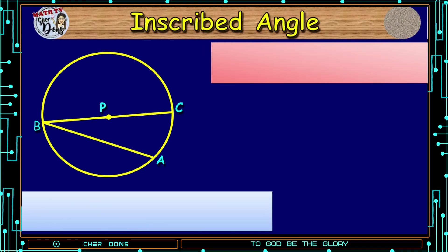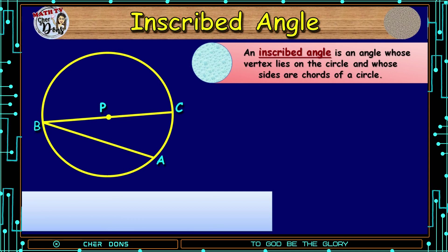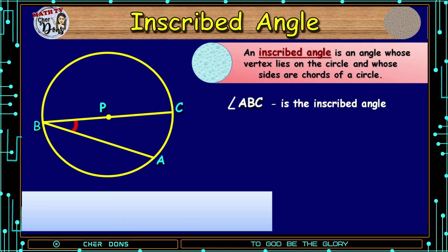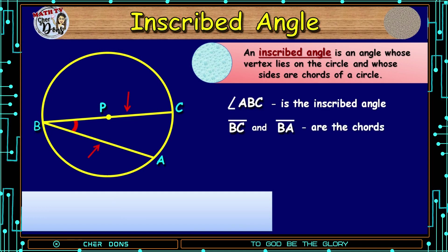Next, we have the Inscribed Angle. An Inscribed Angle is an angle whose vertex lies on the circle and whose sides are chords of a circle. We have here Circle P. Inside the circle is an Inscribed Angle — Angle ABC. Its vertex lies on the circle. The sides, line segment BC and line segment BA, are chords, while arc AC is the intercepted arc.